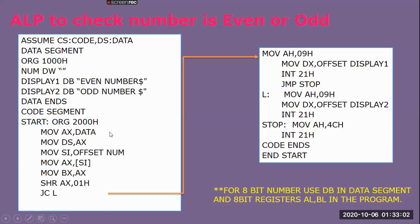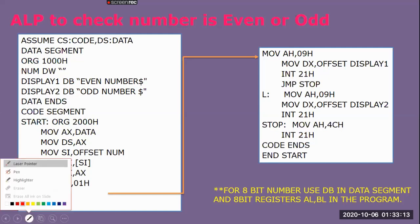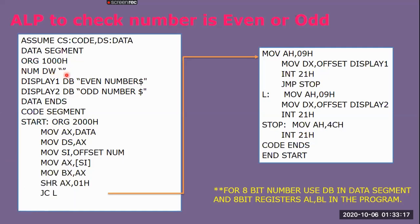This program is written for 16-bit memory. If we want to implement it for 8-bit memory, we change DW to DB — reserving only one byte instead of two. Then we use the AL register instead of AX, and use RCR AL, 01h for the shift operation. With these three changes, our program will work for 8-bit data.